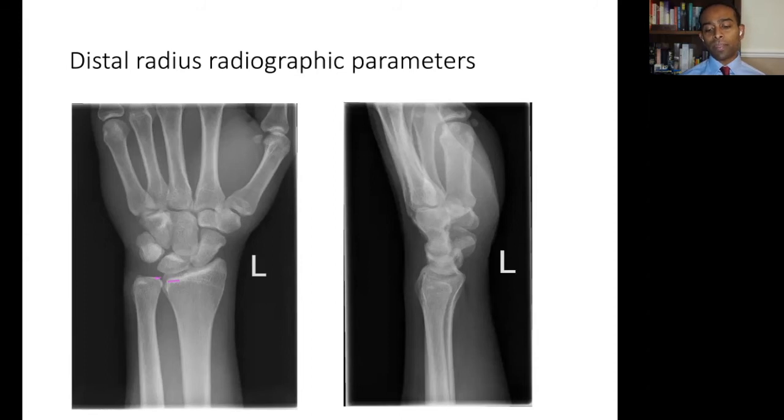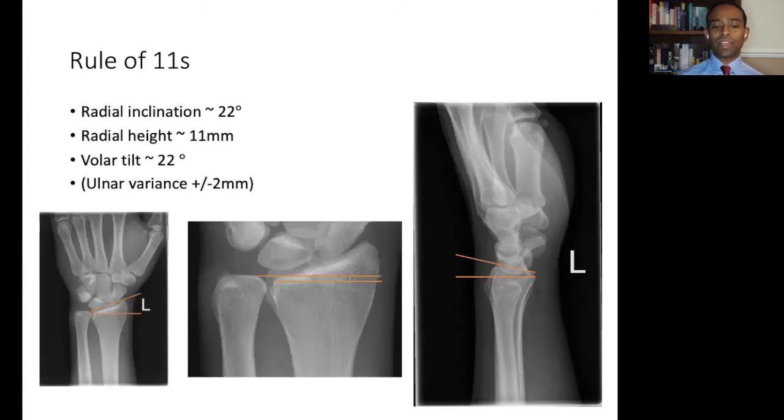On the lateral radiograph, as well as assessing the collinearity of the carpal and radial axes, we can also measure the volar tilt of the radius. Here, we pick out the dorsal and volar lips of the articular surface of the radius and measure that angle against the perpendicular to the axis of the radius. On average, this is 11 degrees volar tilted. All this can be summarized as the rule of 11s.